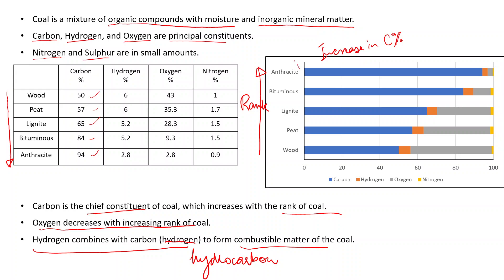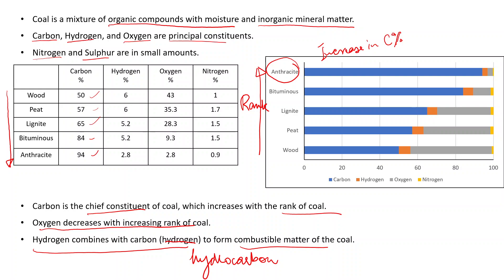Anthracite consists of the highest content of carbon and is the most advanced or highest rank of coal. When we do the proximate analysis of coal, it is a quick and general method of geochemical characterization. It does not require very sophisticated instruments. It includes the determination of moisture, volatile matter, fixed carbon and ash content.